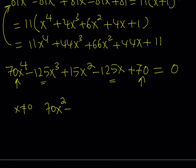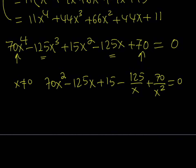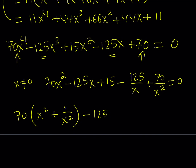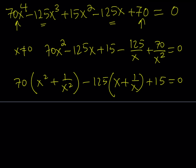Dividing by x squared gives us: 70x² minus 125x plus 15 minus 125 over x plus 70 over x² equals 0. We can group these as 70 times (x² plus 1 over x²) minus 125 times (x plus 1 over x) plus 15. The key insight is that we can express x² plus 1 over x² in terms of x plus 1 over x, which will give us a quadratic equation.